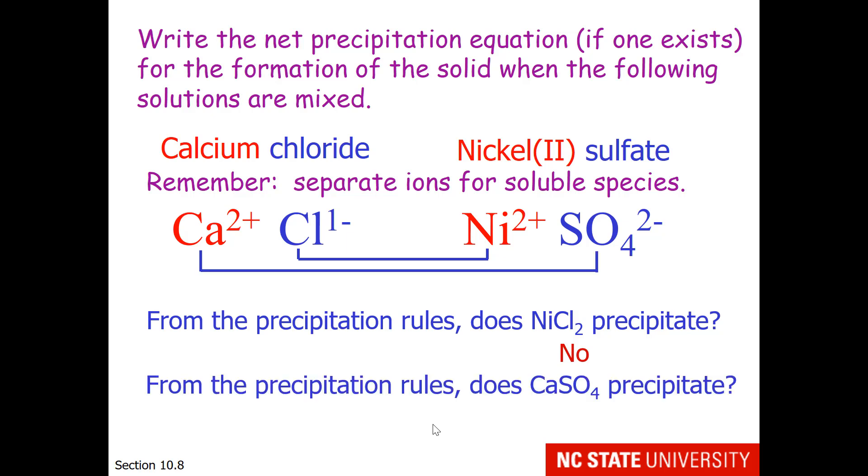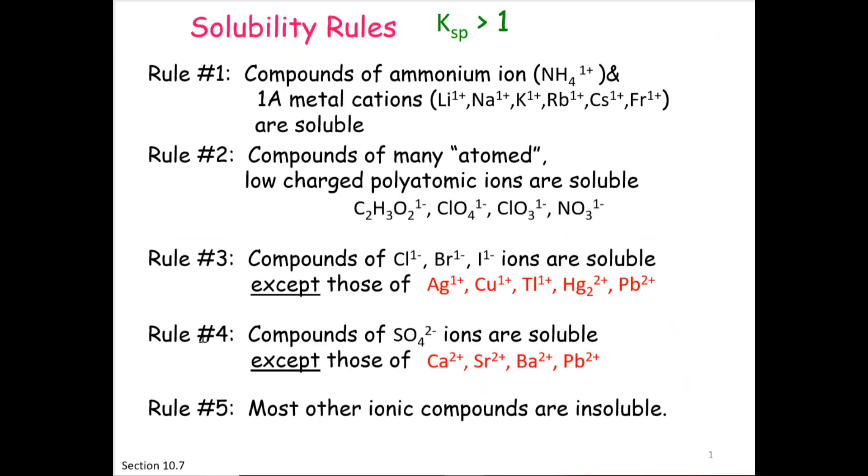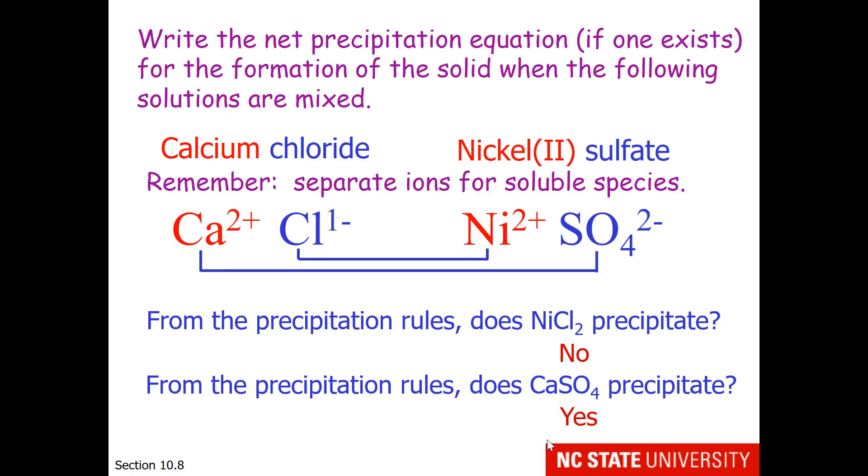What about calcium sulfate? From the precipitation rules, does calcium sulfate precipitate? Let's see here. Rule 4. Compounds of sulfate ions are soluble, but calcium 2+ is an exception, and will form an insoluble compound with sulfate, which means it precipitates. Our answer is yes.